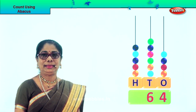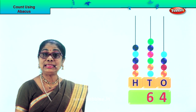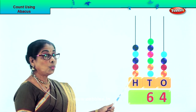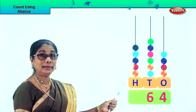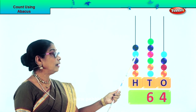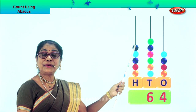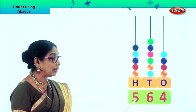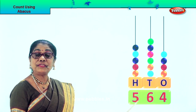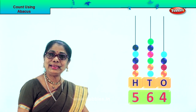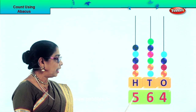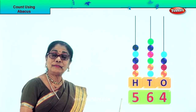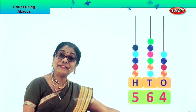Now we go to the 100s place — each bead is 100 and we'll count in 100s: 100, 200, 300, 400, 500. How many beads? 5. So we write 5 here — that is 500. Shall we read the number together? 564.